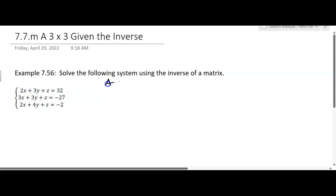A times X equals B. We're talking matrices here. So 2, 3, 2, 3, 3, 4, 1, 1, 1...